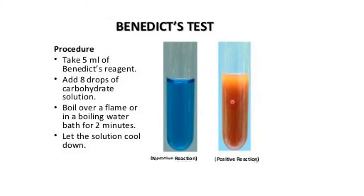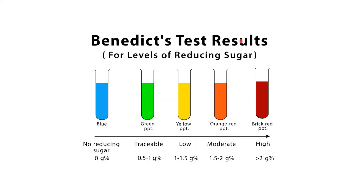For the analytical result interpretation: if the color is blue, this means it is negative — no reducing sugar is present (0 grams). If a green precipitate forms, this means sugar is traceable at 0.1 to 1 gram. If the color is yellow, this indicates low sugar concentration (1 to 1.5 grams). Orange indicates moderate concentration, and brick red or brown indicates a high concentration of sugar — this is the positive reaction.